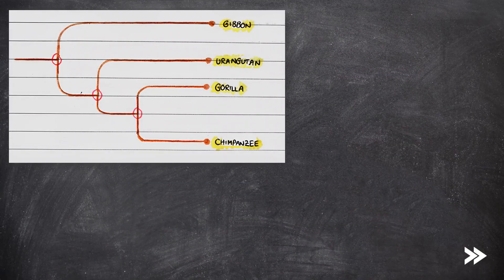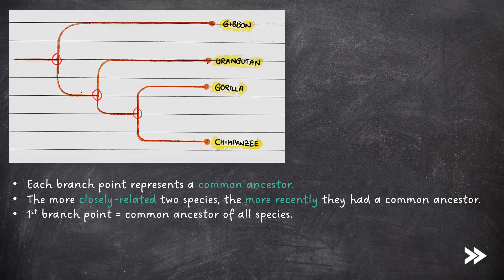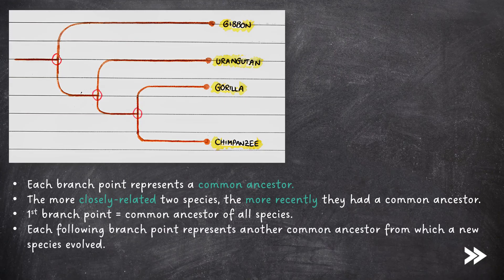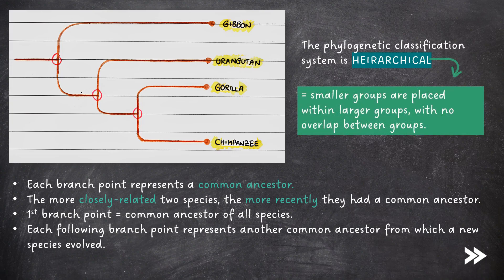Here we have an example of a phylogenetic tree. Each branch point represents a common ancestor. The more closely related two species, the more recently they had a common ancestor. The first branch point represents the common ancestor of all species, and each following branch point represents another common ancestor from which a new species then evolved. The phylogenetic classification system is hierarchical, meaning that smaller groups are placed within larger groups, with no overlap between groups.